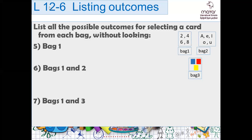List all the possible outcomes for selecting a card from each bag without looking. In bag one, the possible outcomes are 2, 4, 6, 8. Selecting from bag one and two: two A, two E, two I, two O, two U. Then four A, four E, four I, four O, four U.